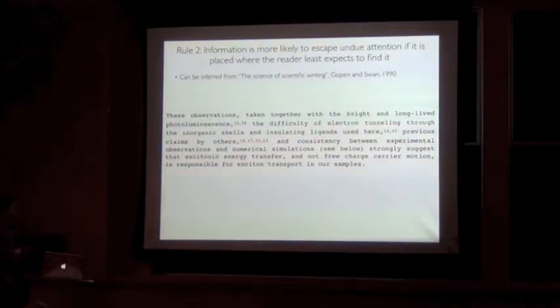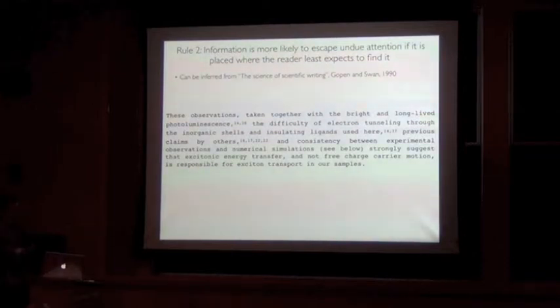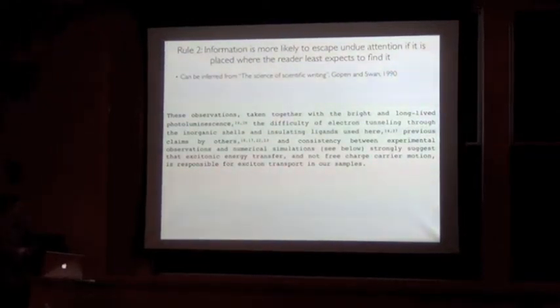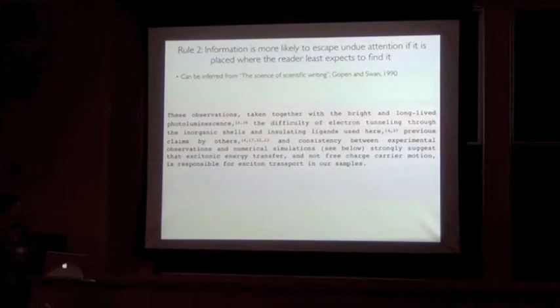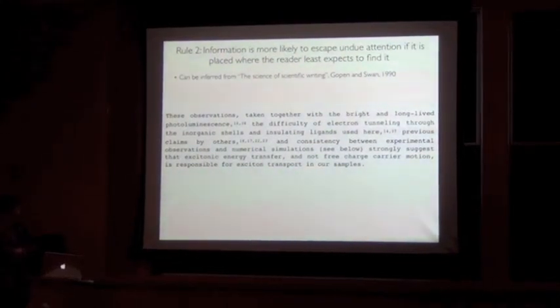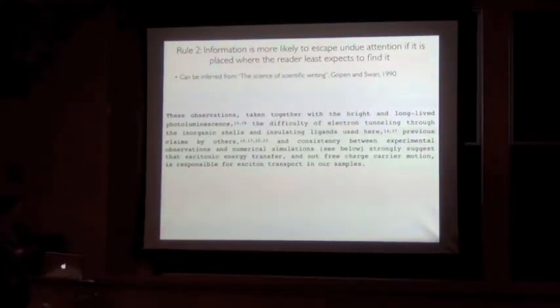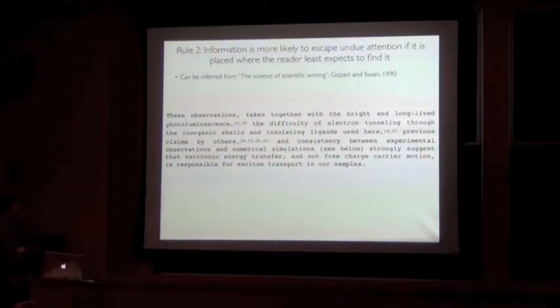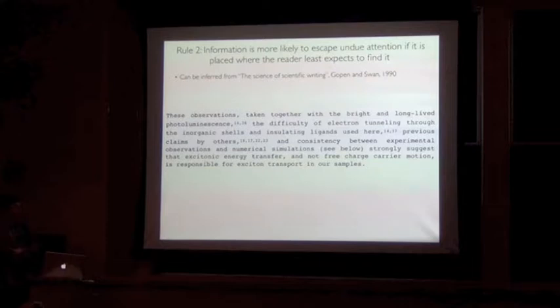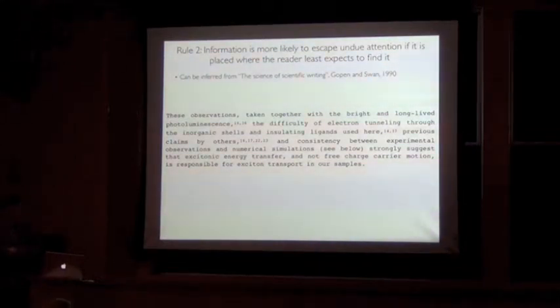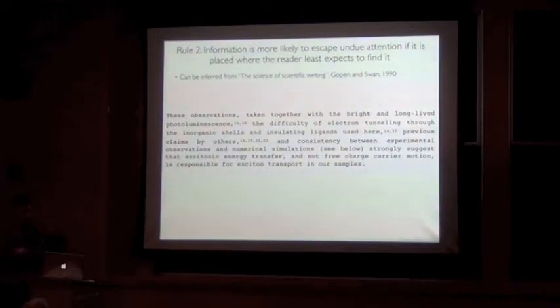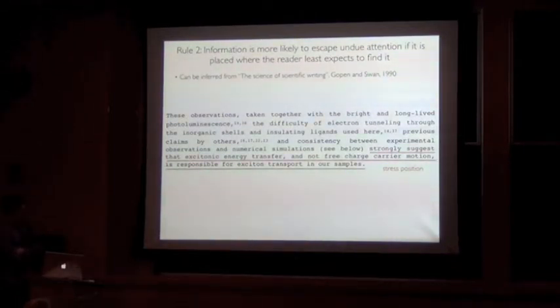So it says, These observations, taken together with the bright and long-lived photoluminescence, the difficulty of electron tunneling through the inorganic shells and insulating ligands, previous claims by others, and consistency between experimental observations and simulations, strongly suggest that excitonic energy transfer and not free charge carrier motion is responsible for exciton transport in our samples. So we'll use this to examine the structure of this passage.